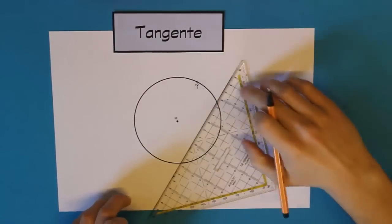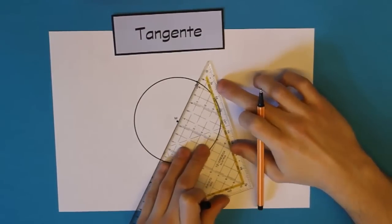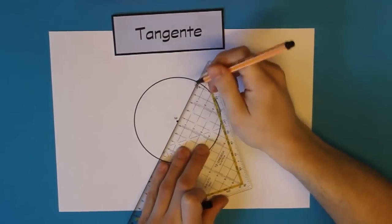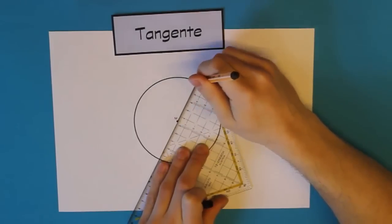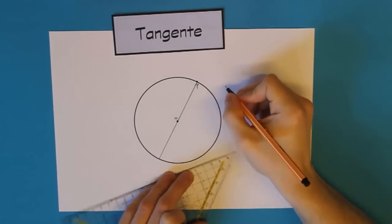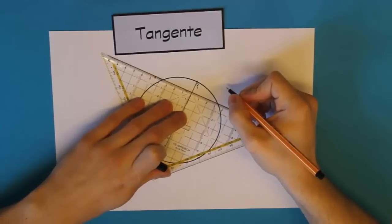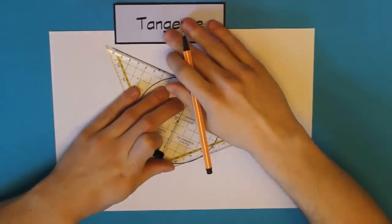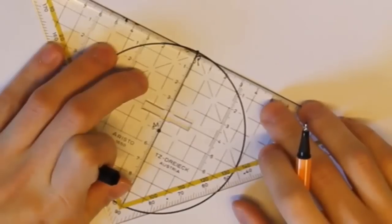Als nächstes zeichnet man jetzt entweder den Radius oder den Durchmesser ein, der im Punkt P endet. Ist egal. Bei einem kleinen Kreis ist es besser, man zeichnet den Durchmesser ein, weil dann kann man besser anlegen. Bei einem großen Kreis reicht auch der Radius. Und das machen wir jetzt da. Wir legen den rechten Winkel in Punkt P an, auf den Durchmesser.